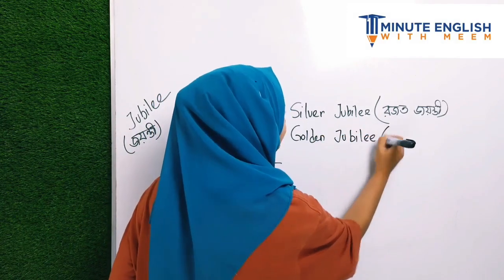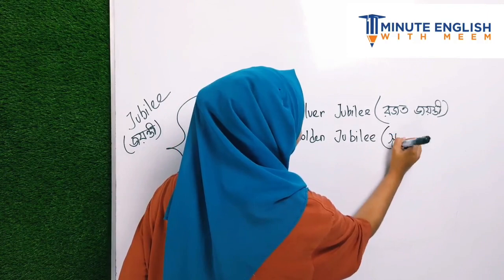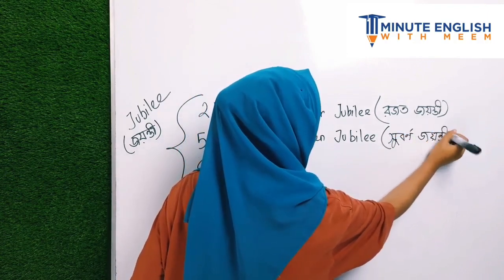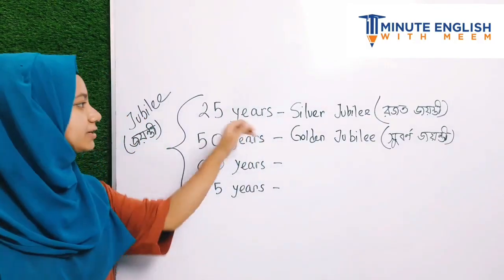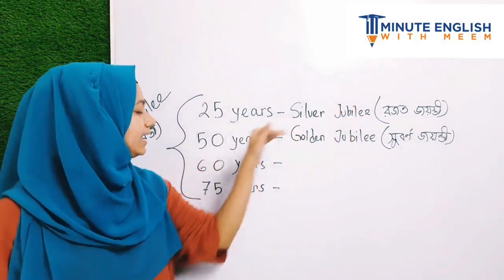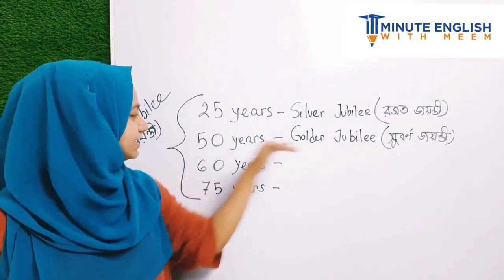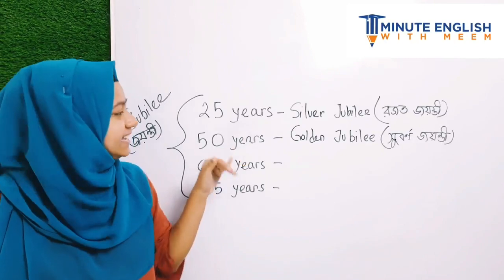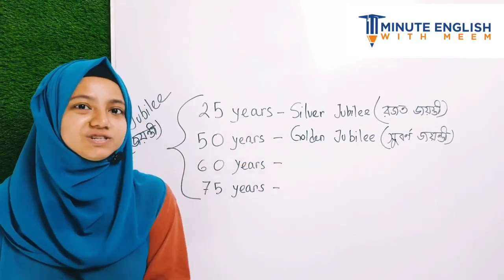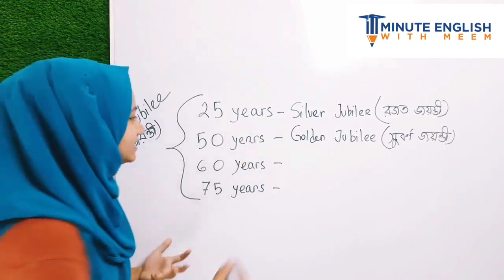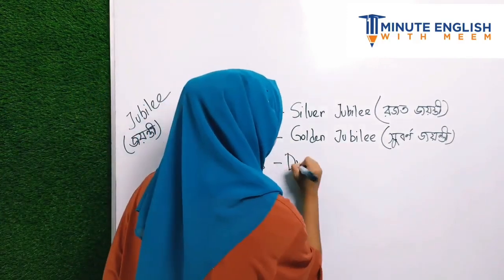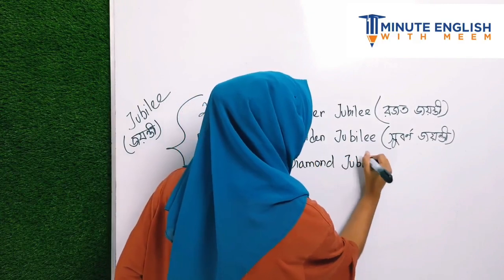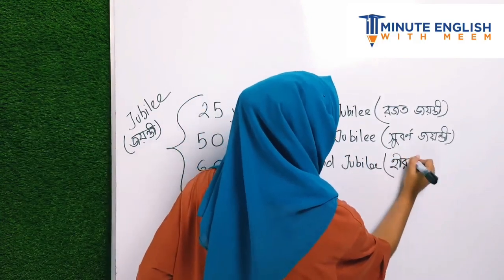So let's learn the specific jubilee terms. 25 years is called 'Silver Jubilee' — in Bengali, 'Rajat Jayanti.' 50 years is called 'Golden Jubilee' — in Bengali, 'Shubarno Jayanti.' Now 60 years — since it is even more precious than gold, we call it 'Diamond Jubilee' — in Bengali, 'Hirak Jayanti.'